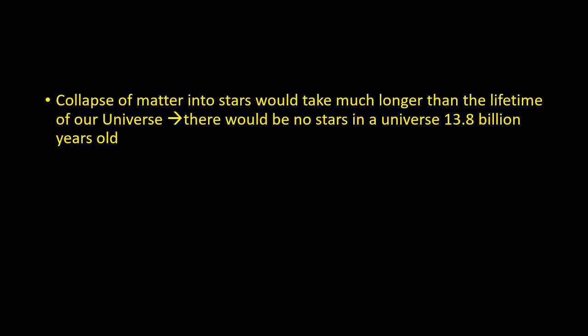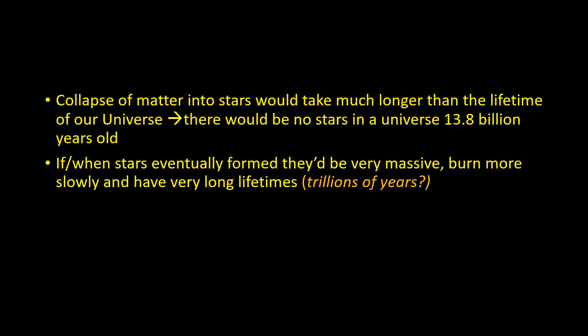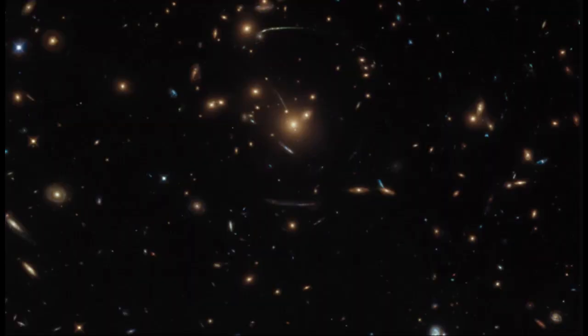Now let's think about how things would look if gravity were 1000 times weaker. The collapse of matter into stars would take much longer than the lifetime of our universe. There'd be no stars in a universe 13.8 billion years old. Stars would be very massive, burn more slowly and have very long lifetimes, or perhaps stars would never form, leading to a dark universe.